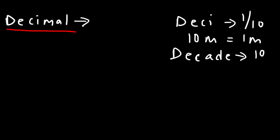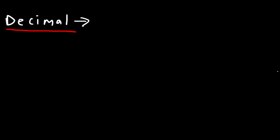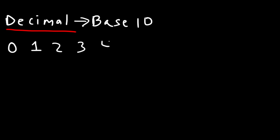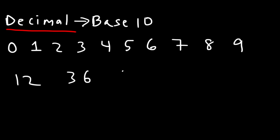The decimal number system is a base ten system, which means there are ten different numbers: zero, one, two, three, four, five, six, seven, eight, and nine — a total of ten numbers. This system is used for everyday counting, for example 12, 36, or 468. We use the decimal system to represent numbers, and it works pretty well.